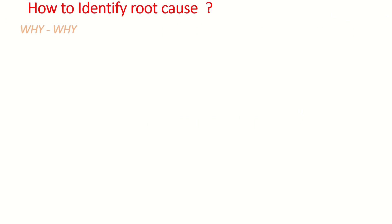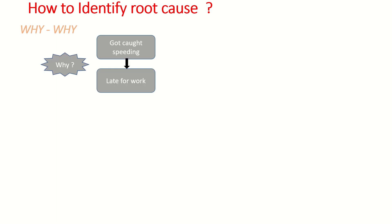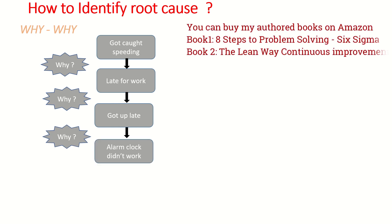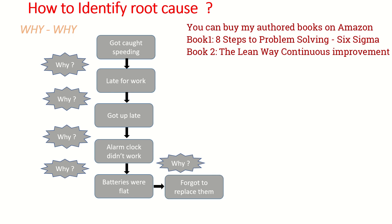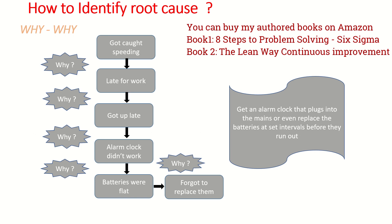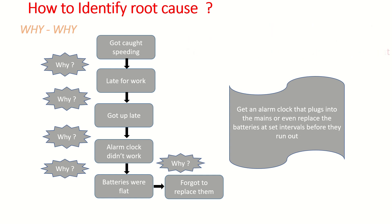The next tool is 5Y analysis — used to identify the root cause of a particular problem. Suppose you were caught speeding. Why? Because I was late for work. Why were you late? Because I got up late. Why did you get up late? Because my alarm clock did not work. Why didn't it work? Because the batteries were flat. Why? Because I forgot to replace them. The real root cause and solution is to get an alarm clock that plugs into the mains, or replace batteries at set intervals before they run out — find a solution where it is truly actionable.